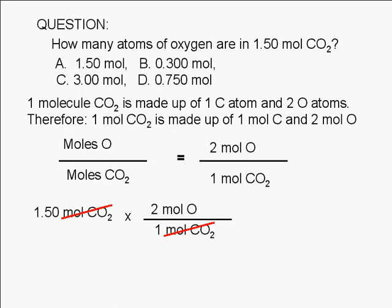The answer we get should be rounded off to three significant figures, since the numbers two and one in the conversion factor are exact numbers. The least precise term in this calculation is 1.50, which has three significant figures, and is equal to 3.00 moles. So the correct answer is C.